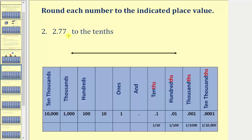Here we're asked to round 2.77 to the tenths. Notice how the seven is in the tenths place value, so 2.77 would be between 2.7 and 2.8. Right in the middle would be 2.75. Notice 2.77 would be approximately here, so to the tenths place value, 2.77 is closer to 2.8 than it is to 2.7, which is why 2.77 rounds to 2.8.